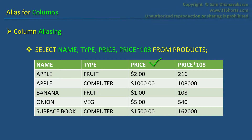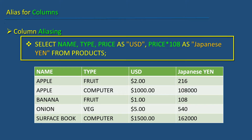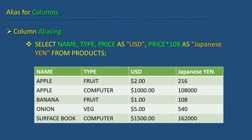If I want the price column to be named as USD and price times 108 to be named as Japanese yen, then I would use this statement: SELECT name, type, price AS "USD", price times 108 AS "Japanese yen" FROM products. The double quotes preserve the case as well as allow us to use multiple words with spaces in between.